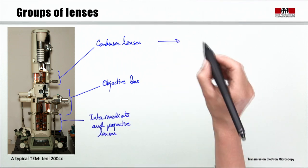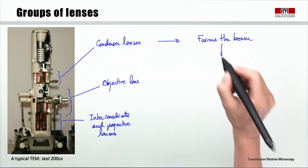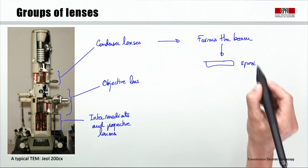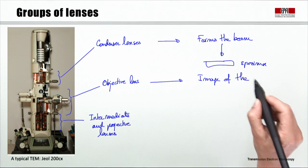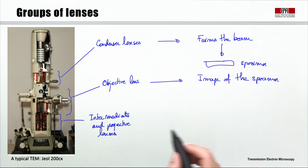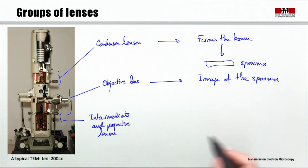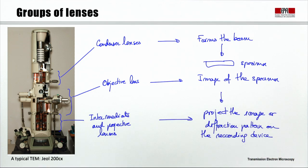So, the condenser lens forms the beam and projects it on the specimen. The objective lens makes an image of the specimen, and the intermediate and projective lenses will project this image on the recording device, magnify it, or project the diffraction pattern and magnify it. It's very important to understand those lenses and how they work. Let's go to the microscope.